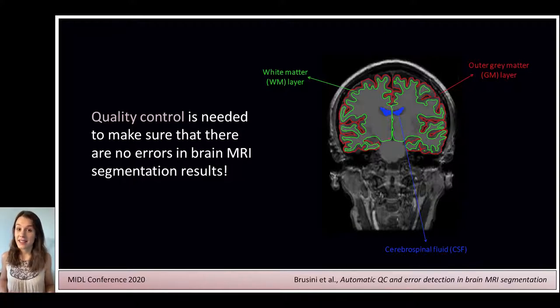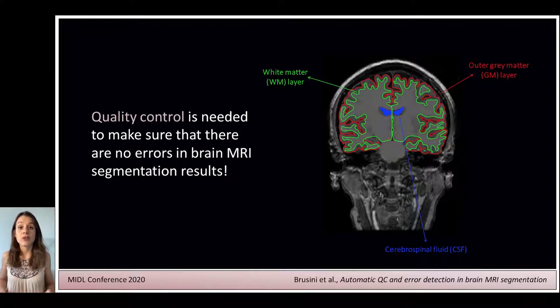In this study, we want to propose a tool that can not only give a quality score to each segmentation result automatically, but also create error maps that can help the rater to identify the error locations more quickly.